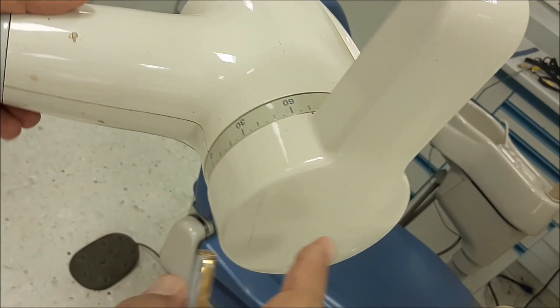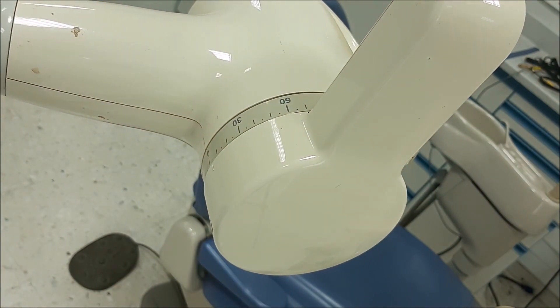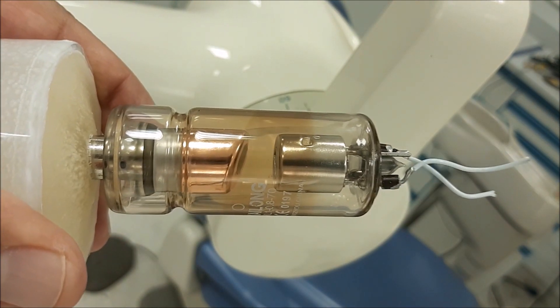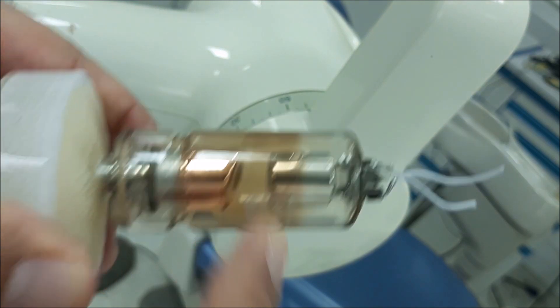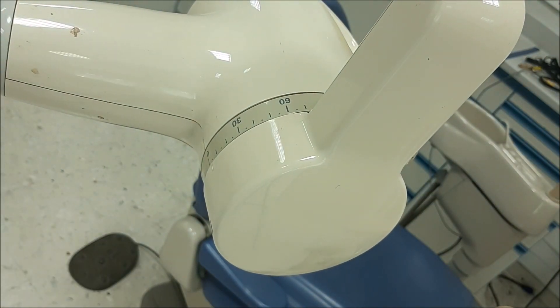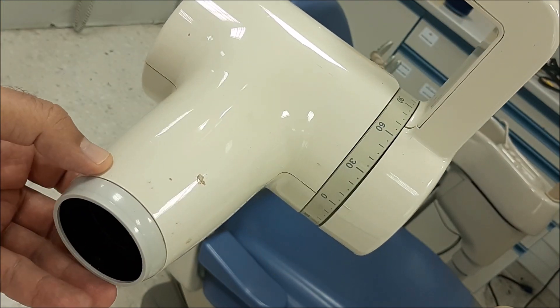This is the x-ray head, while the other part we talked about is the x-ray tube. This will generate the x-ray and house all the other components that are responsible for the production of x-rays.